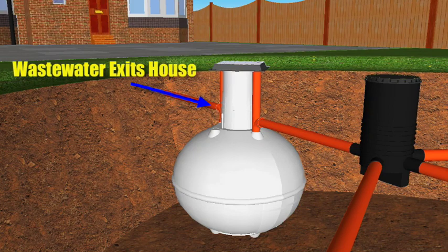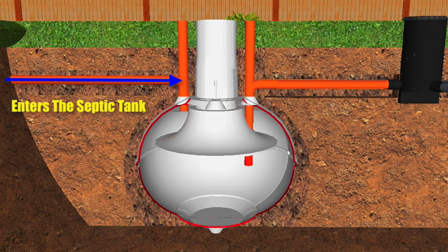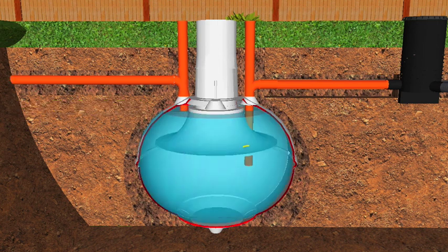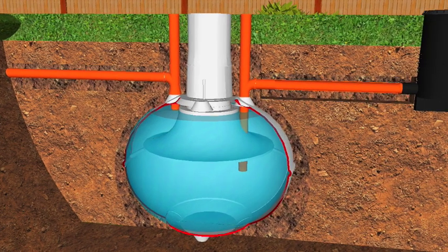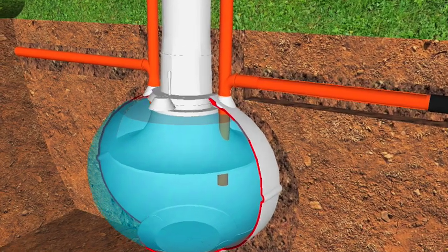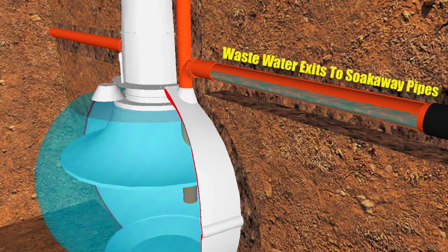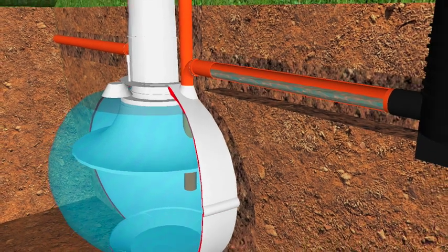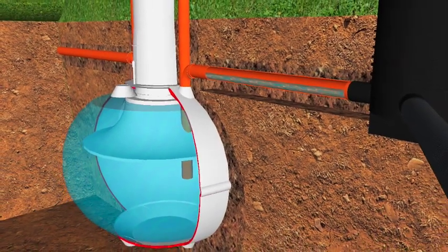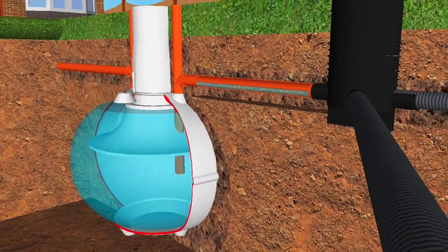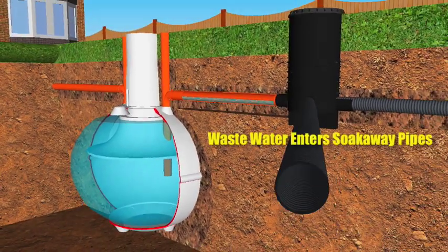The wastewater leaves the house and then enters into the septic tank. From there the wastewater makes its way up through the outlet pipe of the septic tank and then towards the pipes that lead to the soak away. From there the wastewater makes its way down the pipes into the soak away pipes, and then drains naturally into the soil.